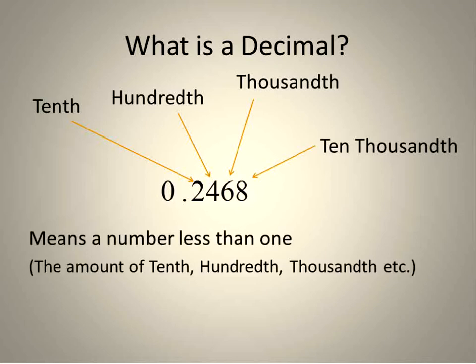A decimal means a number that is less than one. A tenth of one, a hundredth of one, a thousandth, or a ten thousandth, for example.